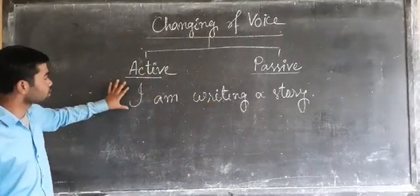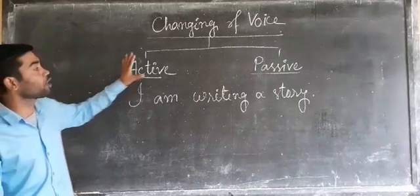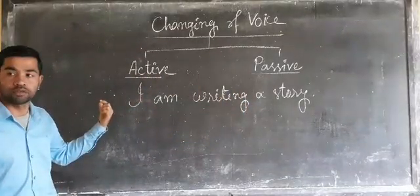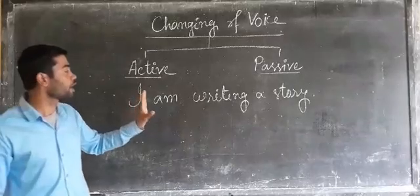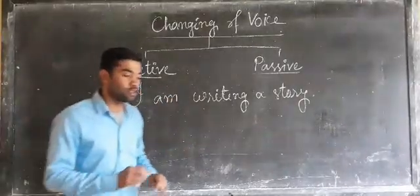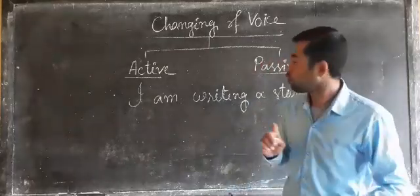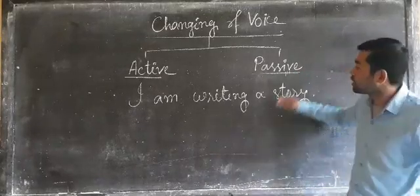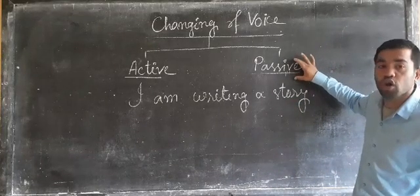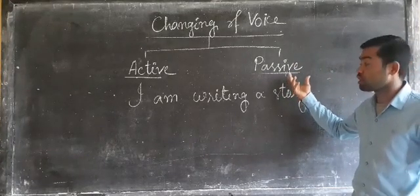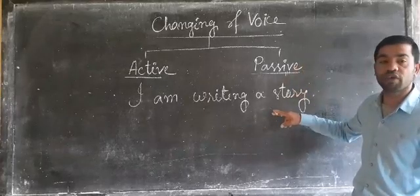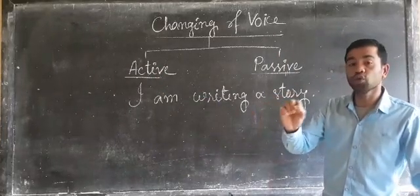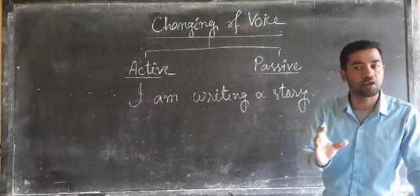If you know this sentence is in active voice, then you have to convert it to passive. And if this sentence is in passive form, then you have to convert it to active. So first you should know whether it is active or passive. You should check whether this sentence is included in passive form. If it is in passive form, then it is a passive voice sentence. If not, then definitely it is an active voice sentence.